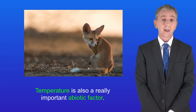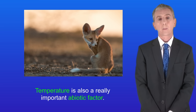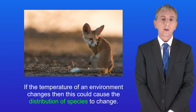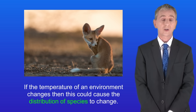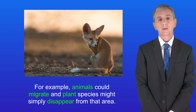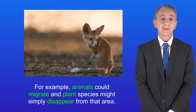Temperature is also a really important abiotic factor. If the temperature of an environment changes, then this could cause the distribution of species to change. For example, animals could migrate, and plant species might simply disappear from that area.